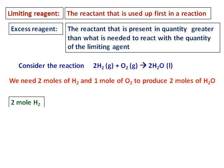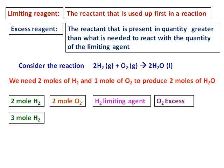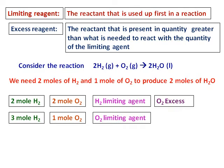Consider some cases. When you have 2 moles of hydrogen and 2 moles of oxygen, I just need 1 mole of oxygen to react with 2 moles of hydrogen. Hence, hydrogen is the limiting agent and oxygen is in excess. In the second example, when I have 3 moles of hydrogen and 1 mole of oxygen, for every 3 moles of hydrogen I need 1.5 moles of oxygen. I have only 1 mole, and hence oxygen is the limiting agent and hydrogen is present in excess.